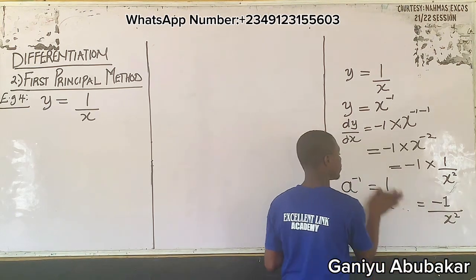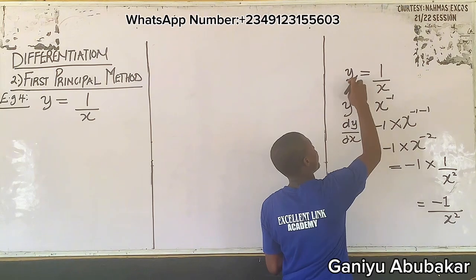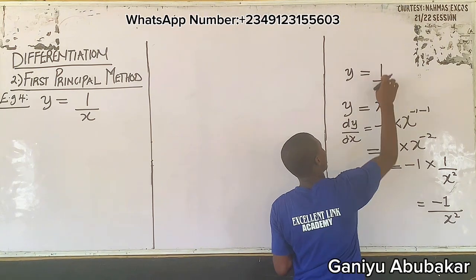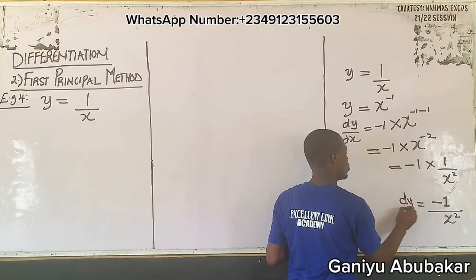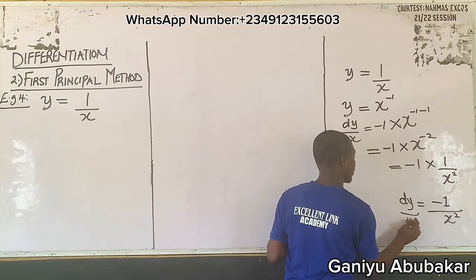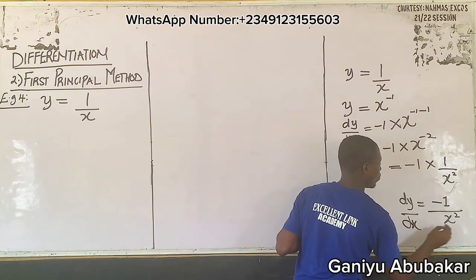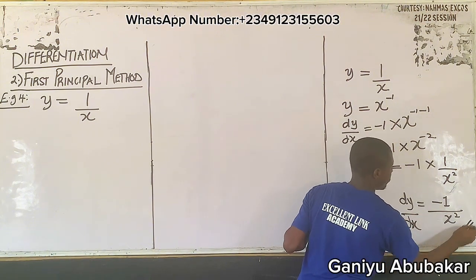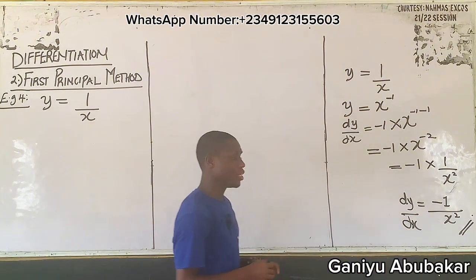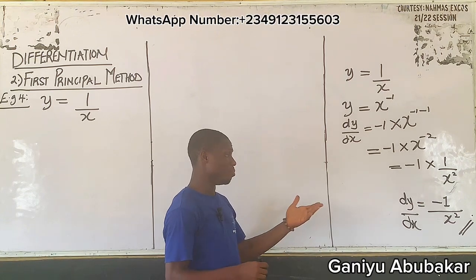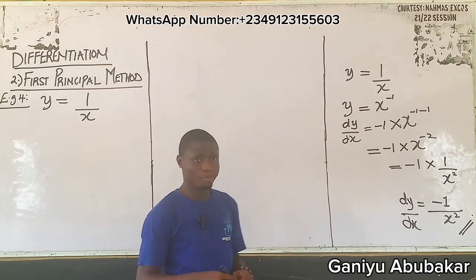So if I differentiate y equal to 1 over x, dy/dx is equal to minus one over x squared using the general method. Now let's apply the first principle and see if our answer will be comparable.